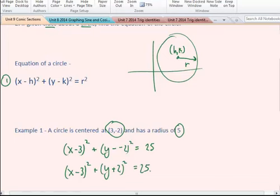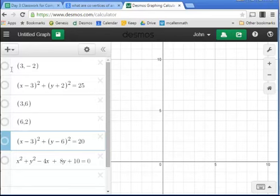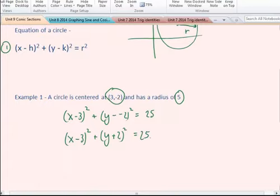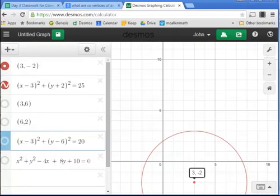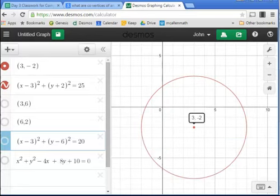If we go to Desmos, and we look at that plot, here is our original point, and here is that equation, and you could see that we have a circle of radius 5 at 1, 2, 3, 4, 5. There is a radius being 5, and the center point is 3, negative 2.